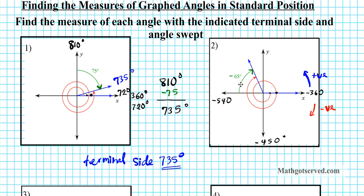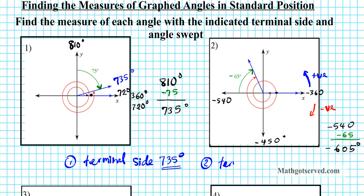So we have to subtract another 65 degrees in order to get to the terminal side, because the direction is clockwise. We have negative 540 and we subtract 65. Our final answer is negative 605 degrees. So for number 2, the terminal side is negative 605 degrees.